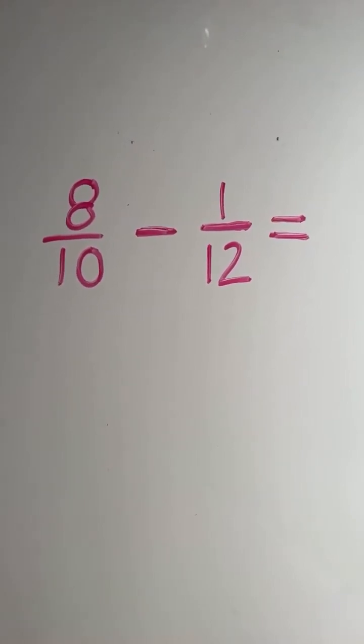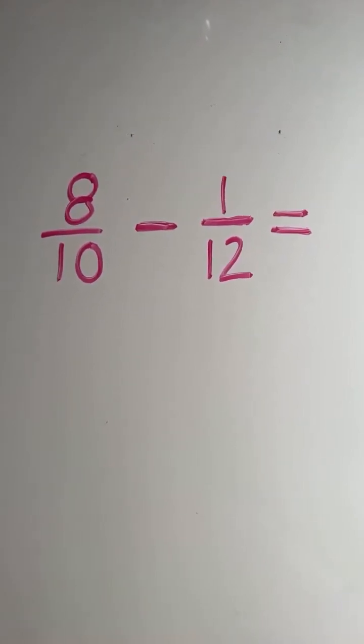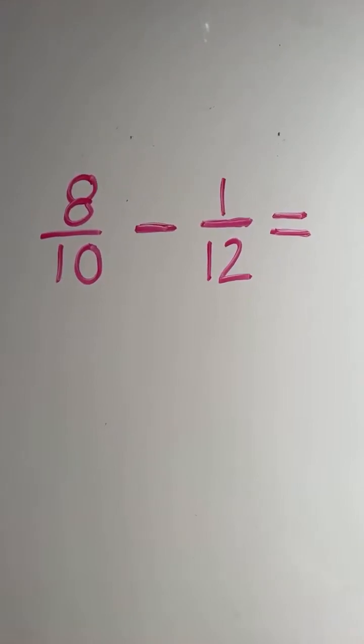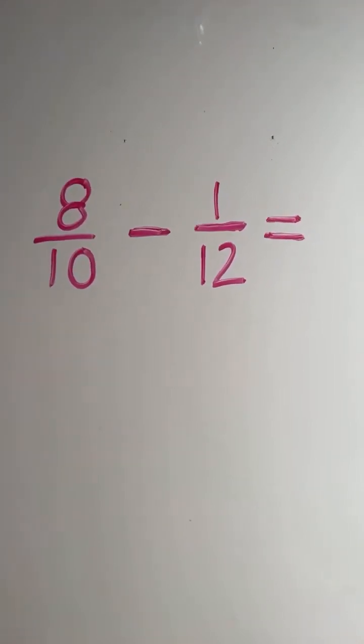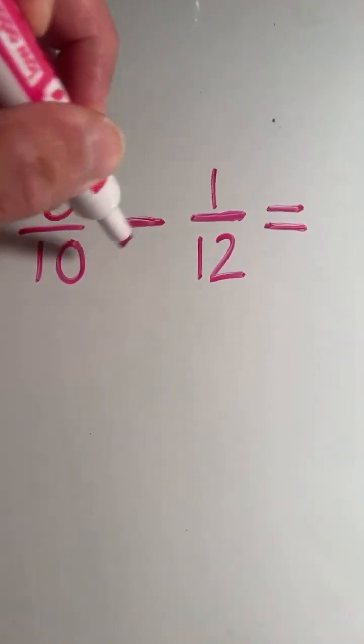So step one, we have to find a common denominator. The quickest way to do that is to multiply the two separate denominators. So I'm going to multiply 10 times 12.